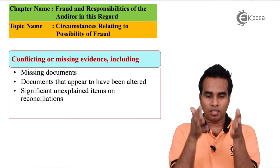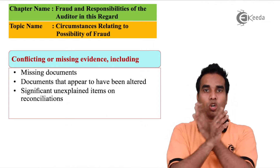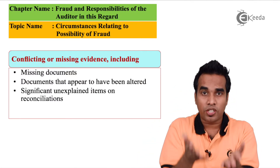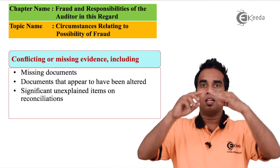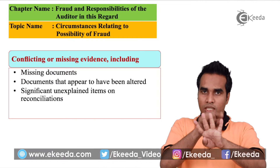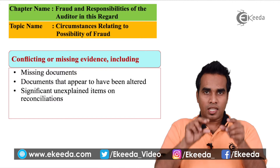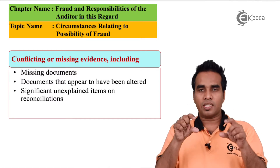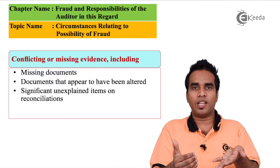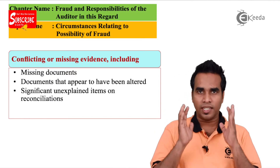Second circumstance: missing evidence. Document missing — if proper and sufficient documents or evidence are not available for any transaction record, that is considered missing evidence. This is the second part, and it is very clear.